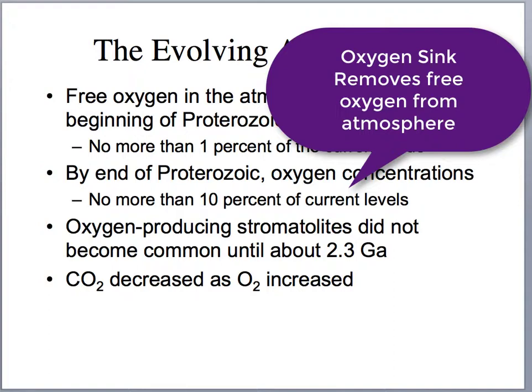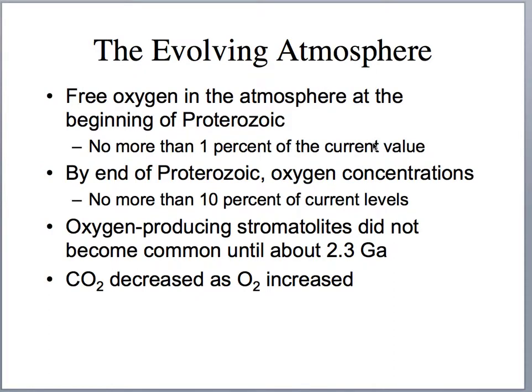Mostly these oxygen sinks are banded iron formations. Mid-oceanic ridges produce reduced iron that easily dissolves in water, but once it encounters oxygen, it precipitates as oxidized iron — or rust — forming these banded iron formations. Oxygen-producing stromatolites did not become common until about 2.3 billion years ago. Over time, as free oxygen increased, carbon dioxide decreased.